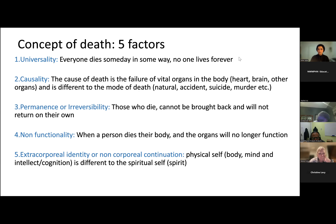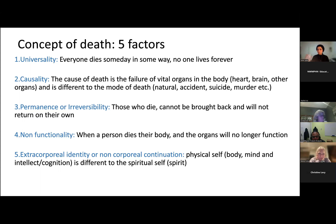We'll start with a discussion on what's called the concept of death. A lot of people have tried to define the age at which a child is able to understand that death is final. We've moved away from that kind of thinking and moved on to the idea that there are five criteria used to determine the level of understanding a child has in relation to death. The first is the concept of universality — the realization that everyone who is born must die some day, through natural accidents, illness, or by suicide, and that no one lives forever. The cause of death is the failure of vital organs such as the heart, brain and other organs, and that is different to the mode of death — natural accidents, suicide, murder and so on.